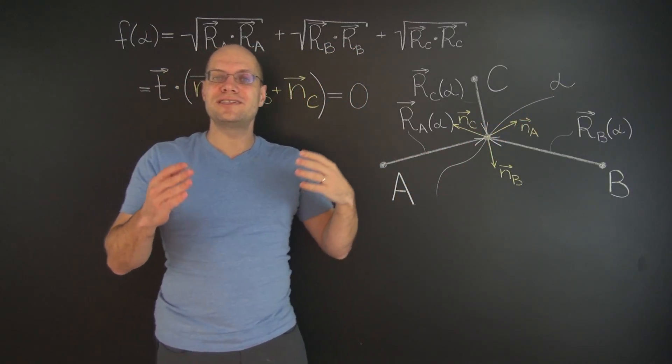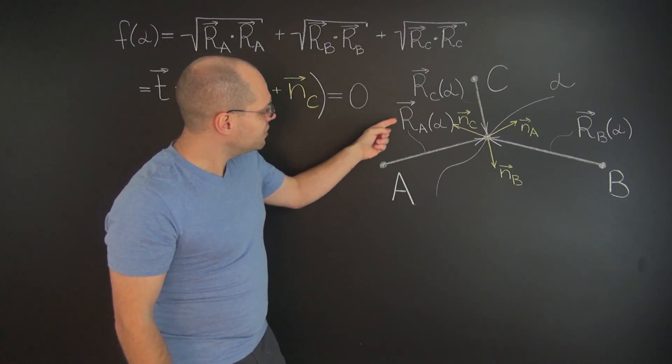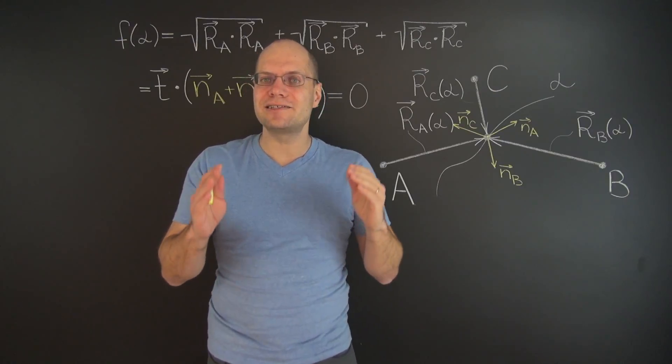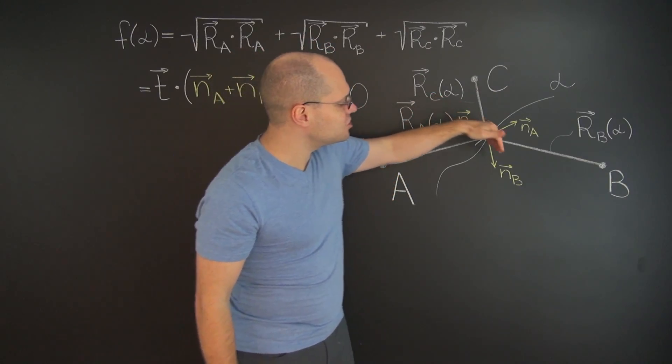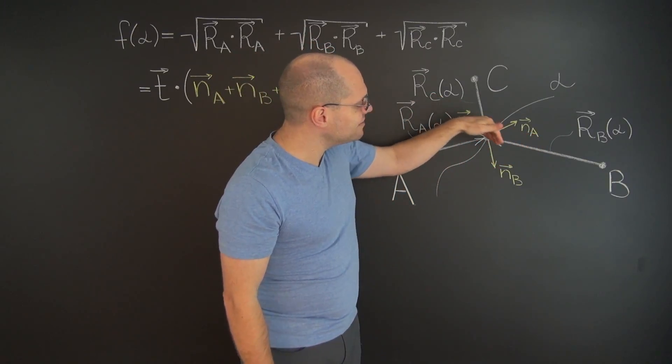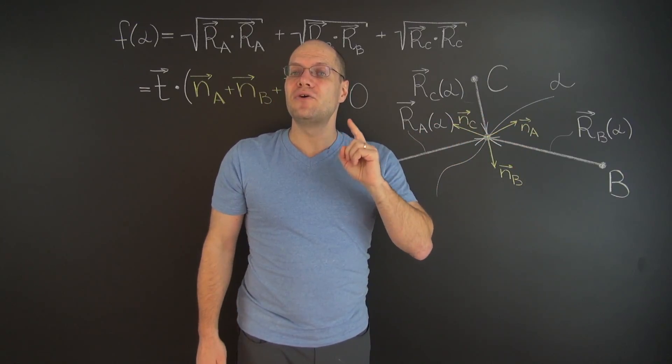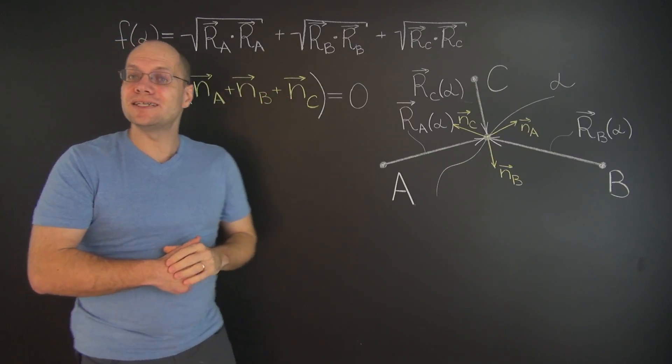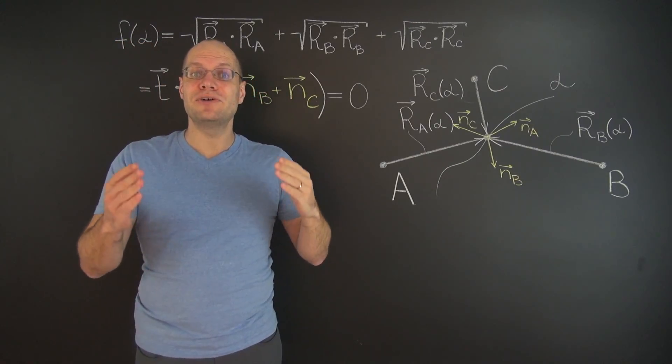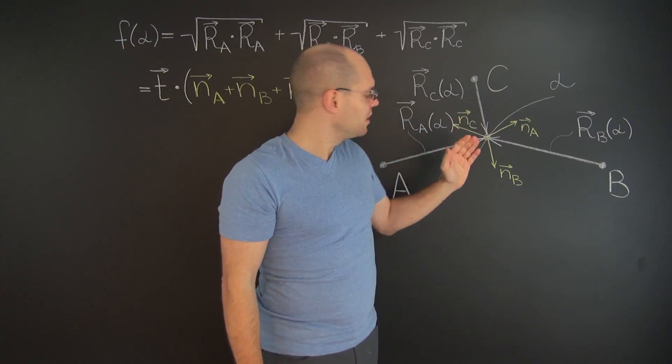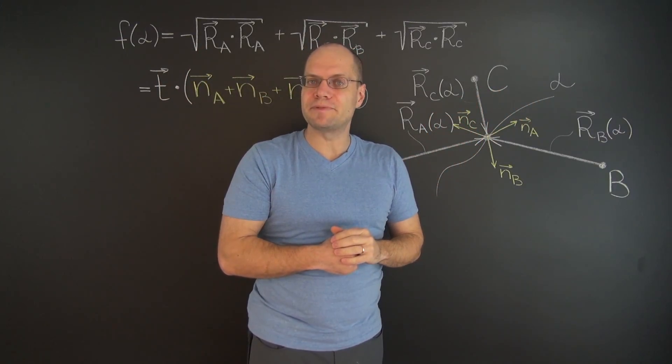But it's also orthogonal to the tangent to any other curve that we could have drawn through this point. So it must be simultaneously orthogonal to any direction of any line that passes through this point. So from that we can conclude that this sum must be zero. So you see how we take advantage of the arbitrariness of the curved line that we chose to draw through the optimal point.